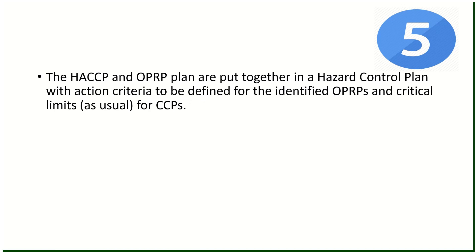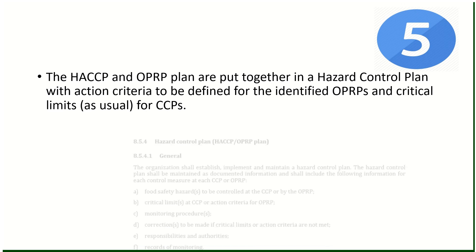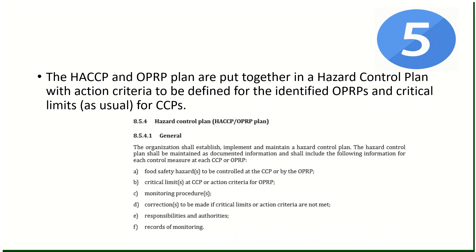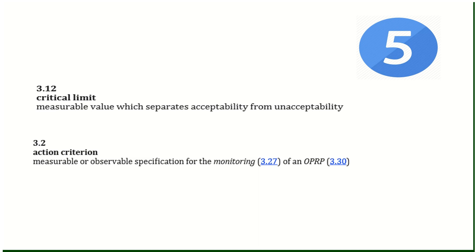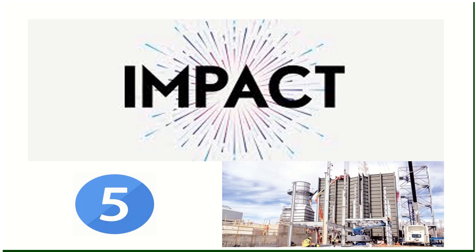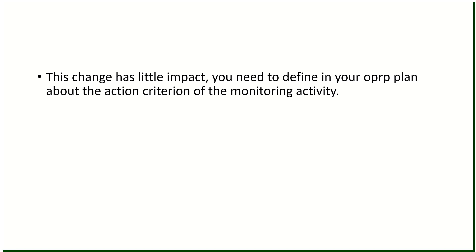Change number five: the HACCP and OPRP plans are put together in a hazard control plan, with action criteria to be defined for identified OPRPs and critical limits for CCPs. Action criteria is an additional requirement — if there is an OPRP, a measurable or observable specification for monitoring must be defined. Note the difference: critical limits relate to product or process acceptance criteria, whereas action criteria is the acceptable specification for monitoring an OPRP. Impact: you need to define action criteria in your OPRP plan.